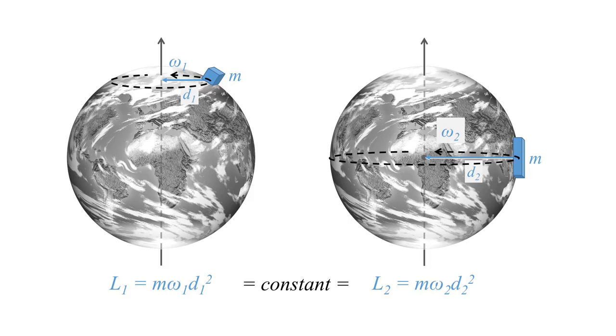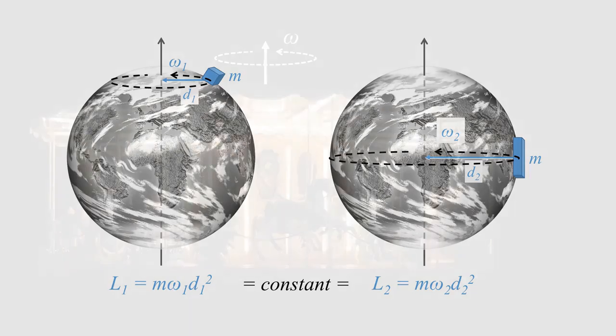So, if everything is spinning, the need for a reference becomes clear. Let's think of riding a carousel. Assume that it's totally dark outside and all you see is just the carousel itself — you will not be able to find out how fast you are spinning.